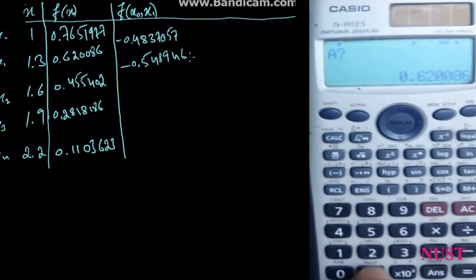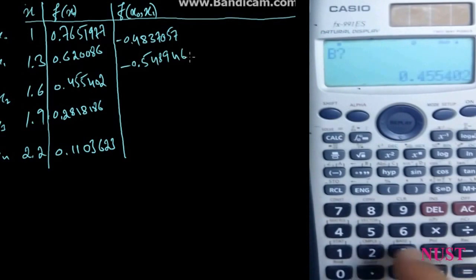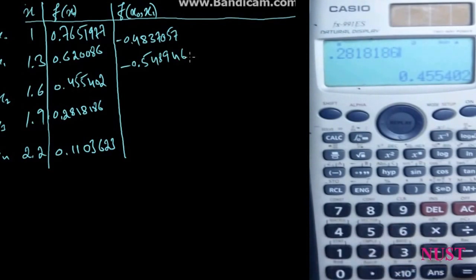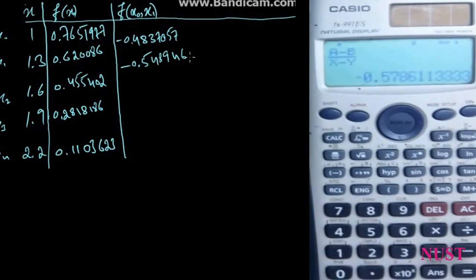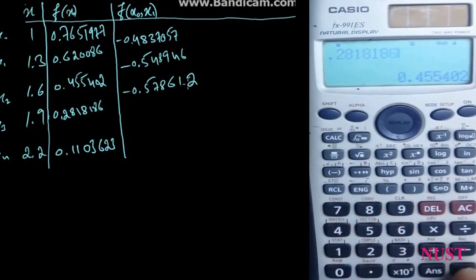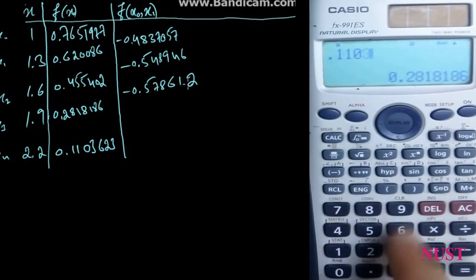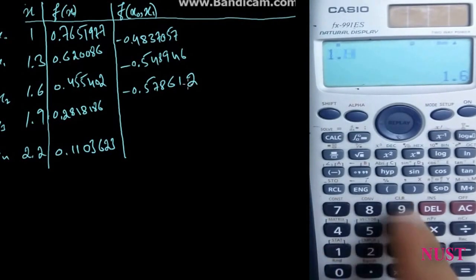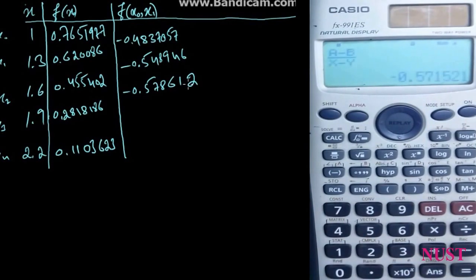Go back again to the equation, press Scale C. Enter for A: 0.455402, and for B: 0.2818186. Then for the next entry, enter for A: 0.620086, for B: 0.1103623, for X: 1.9, and for Y: 2.2. We get minus 0.571521.